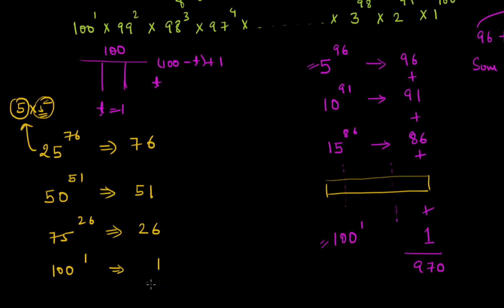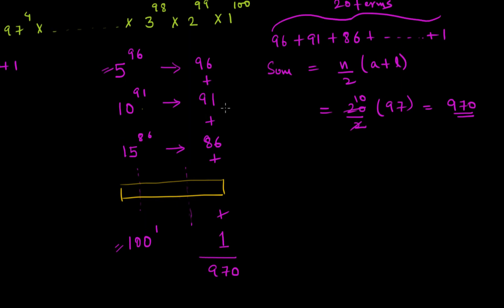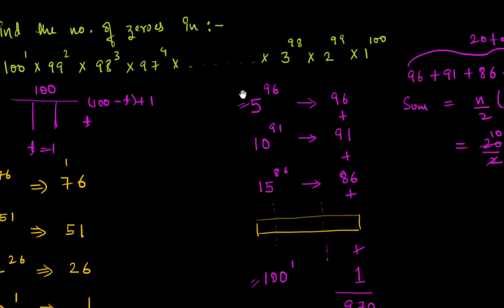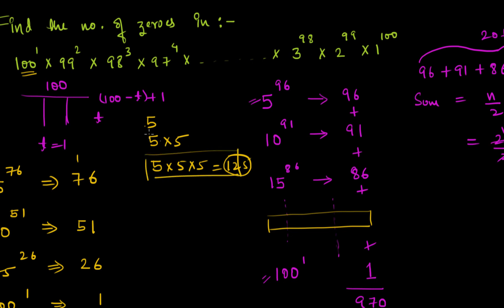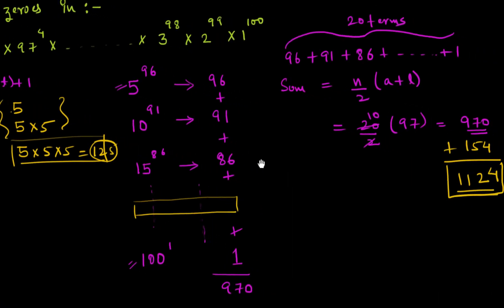Adding the extra fives from multiples of 25: 76 + 51 + 26 + 1 = 154. Combined with the 970 from multiples of 5, the total is 970 + 154 = 1124 zeros. We don't need to check multiples of 125 because 125 exceeds 100, so there are no such terms in our product. The final answer is 1124 zeros.